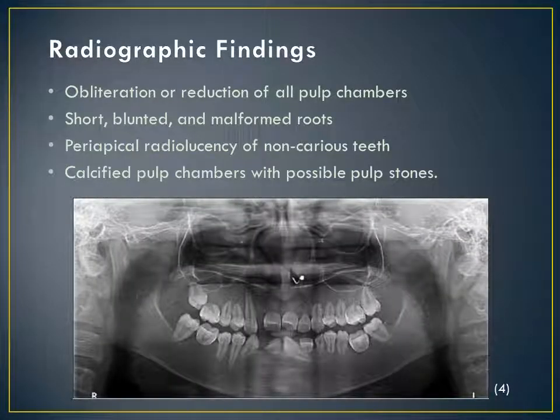The radiographic analysis shows obliterated or reduced pulp chambers, short blunted and malformed roots, periapical radiolucencies of non-carious teeth, and calcified pulp chambers with possible pulp stones.